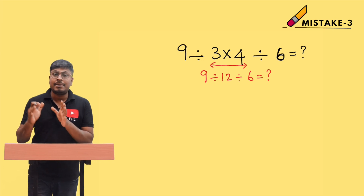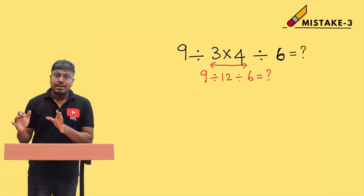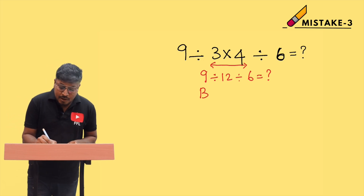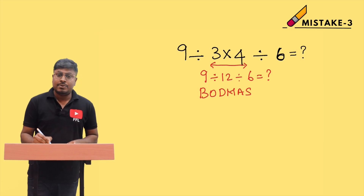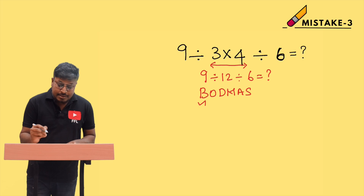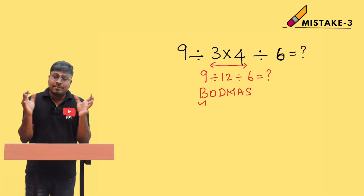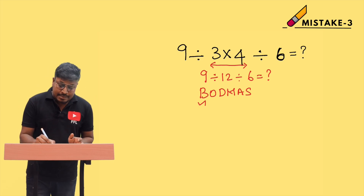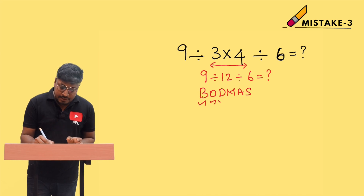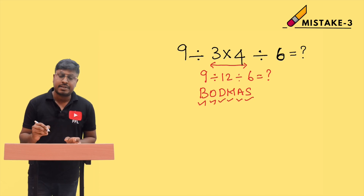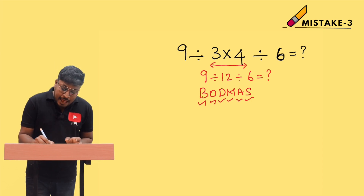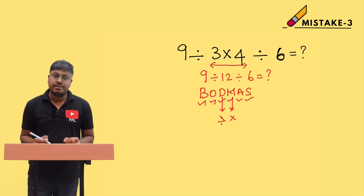When solving a mathematical operation question, there is a basic rule called BODMAS. Never forget this rule. You have to solve what is inside brackets first, then 'of,' then division, then multiplication, and finally addition and subtraction. So division always comes before multiplication.